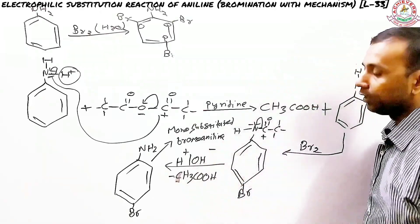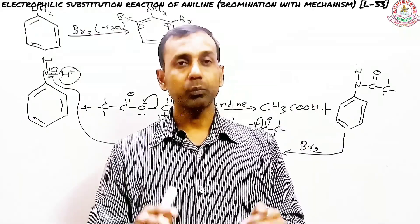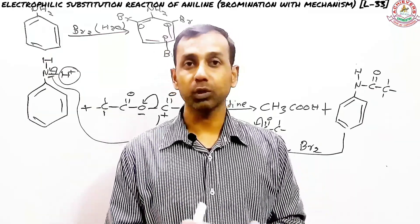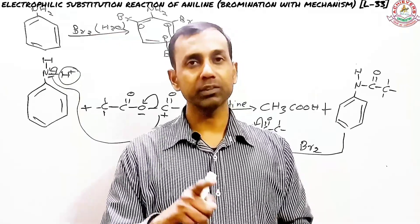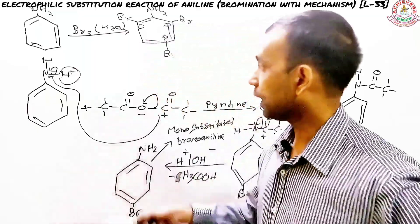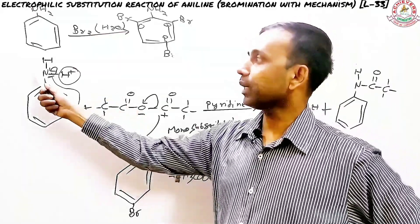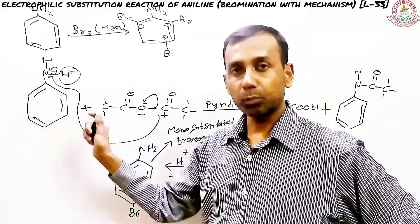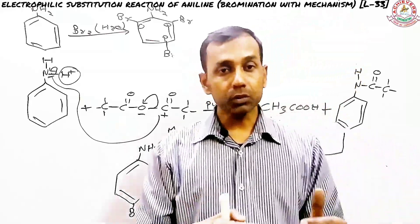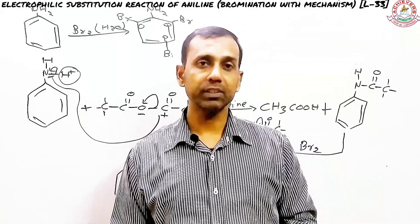To recap: when you react aniline directly with bromine water, the highly reactive amine group causes substitution at all three positions — two ortho and one para — giving 2,4,6-tribromoaniline. To get mono-substituted bromoaniline, you first react aniline with acetic anhydride to decrease the reactivity of the nitrogen, then brominate to get mono-substitution at one position, and finally hydrolyze to remove the acetyl group. Thanks for watching and take care.